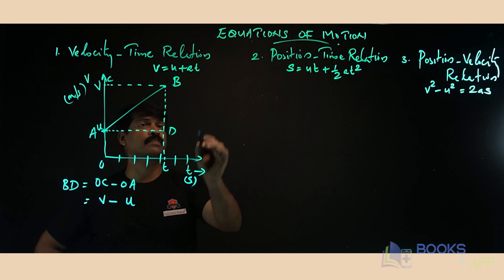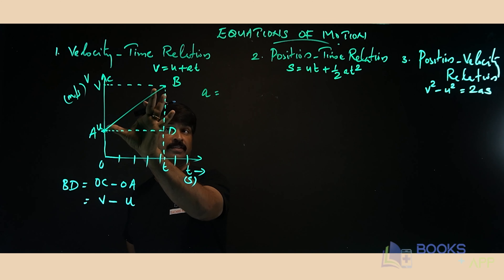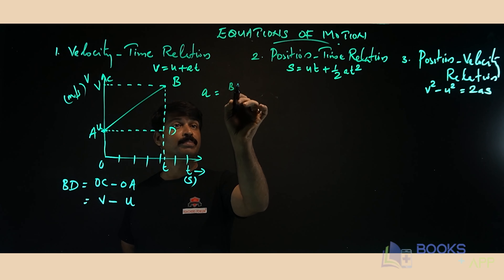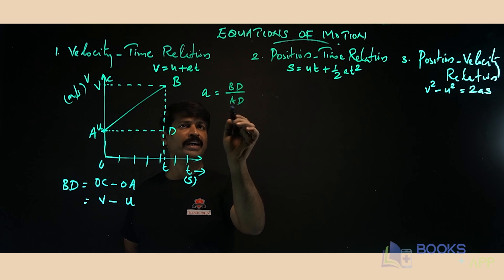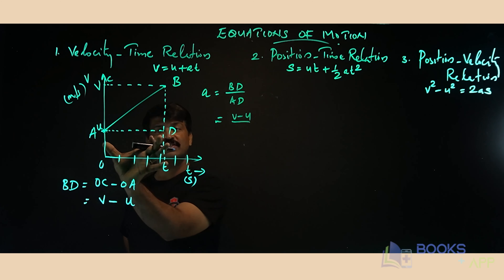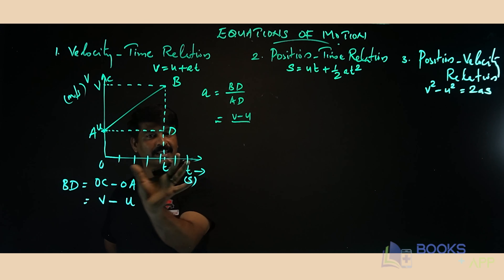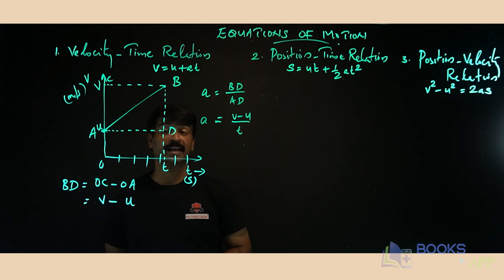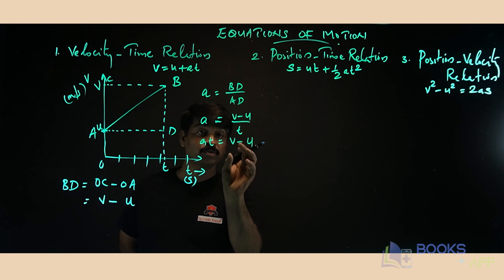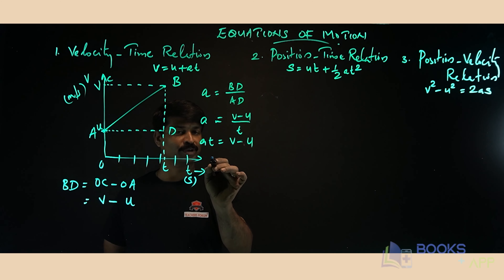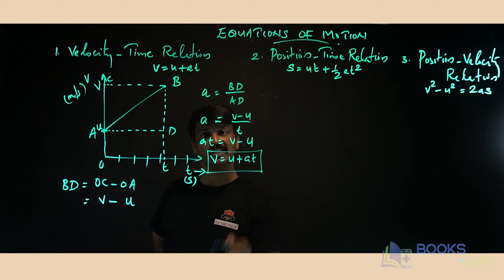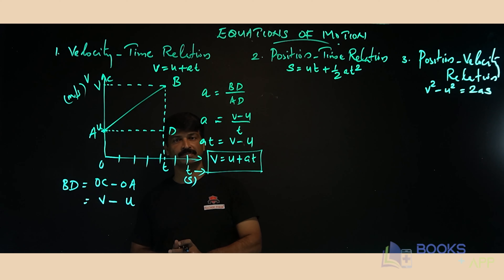The slope of this velocity-time graph gives the acceleration. To find the slope, we calculate BD divided by AD. BD is equal to v minus u, and AD is the time taken, which is t. So acceleration a = (v - u) / t. Cross-multiplying gives at = v - u, which rearranges to v = u + at. This is the first equation of motion, the velocity-time relation.